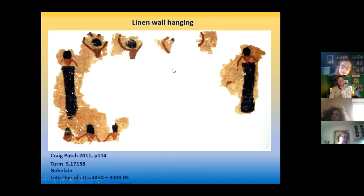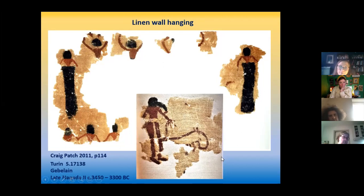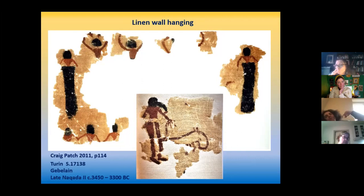We have black here and not the white skirts, but there is a degree of similarity. There are two of these linen wall hangings found at Gebelen, now in Turin. We do see images of the hunt, and there's this association of representations of women possibly carrying out rituals alongside the hunt.